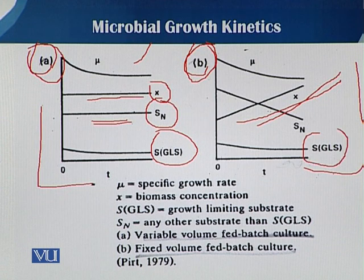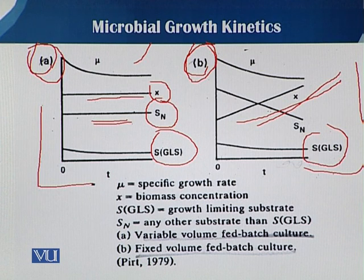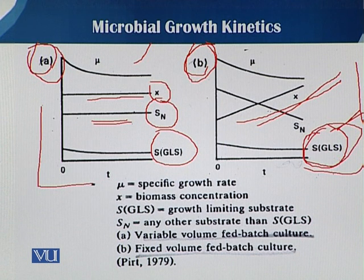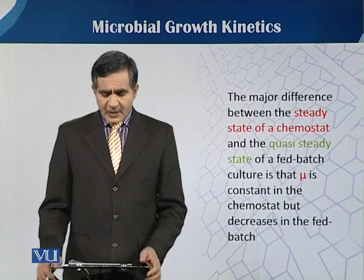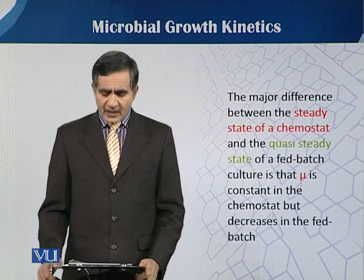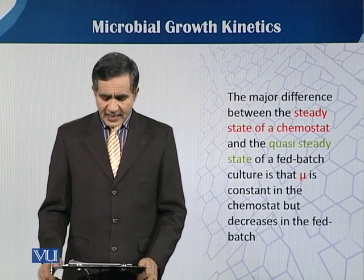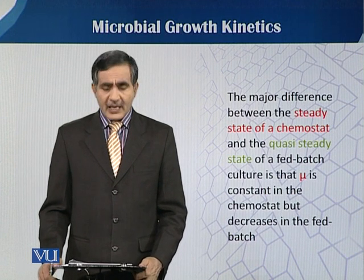The concentration of growth-limiting substrates appears the same since feeding strategy is focused on GLS. Non-limiting substrates gradually decrease because they are not being added. The major difference between the steady state of a chemostat and the quasi-steady state of fed batch culture is that mu is constant in the chemostat but decreases in fed batch.